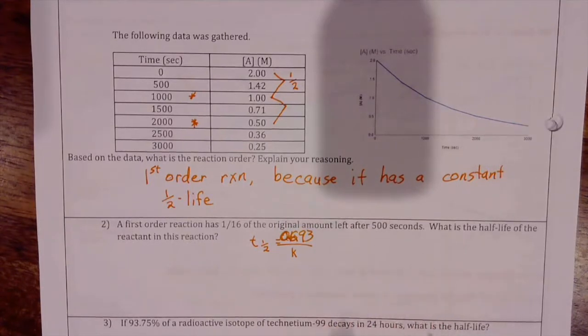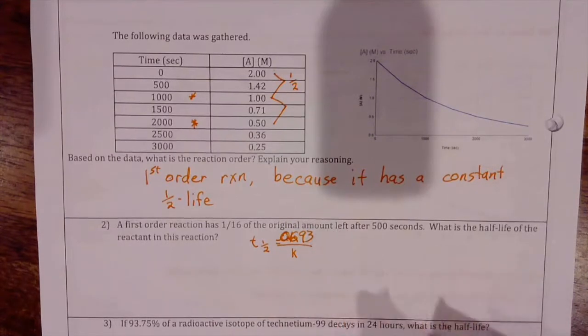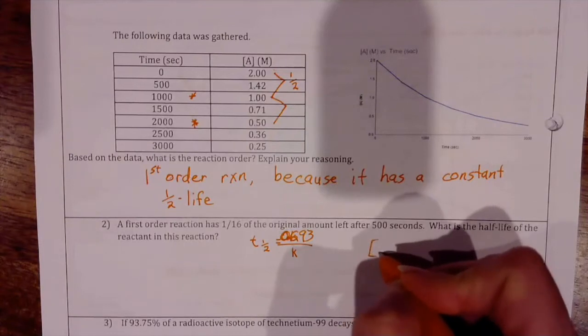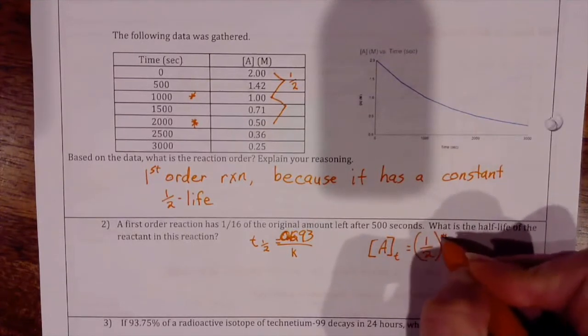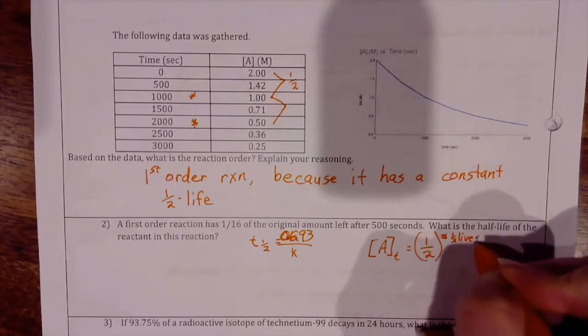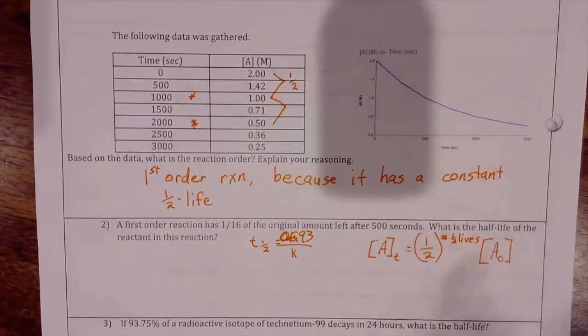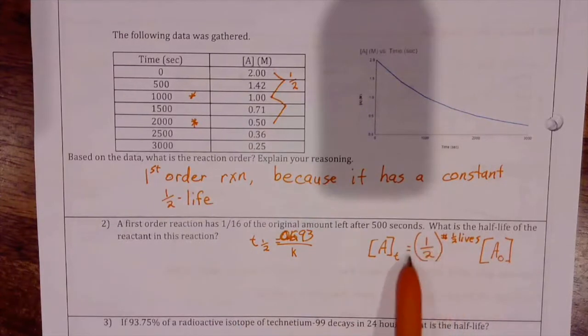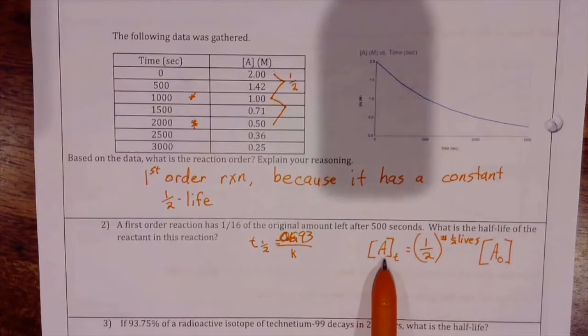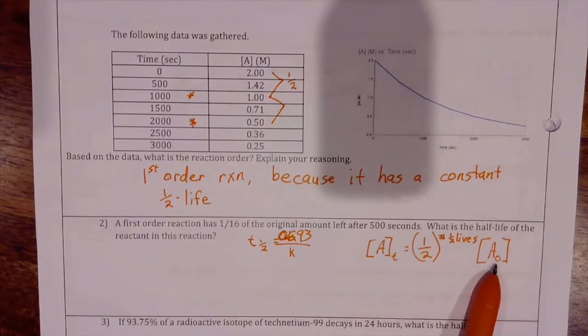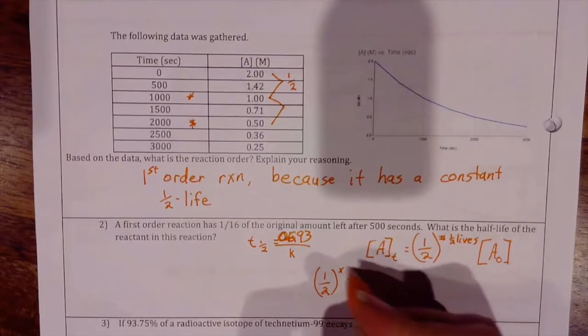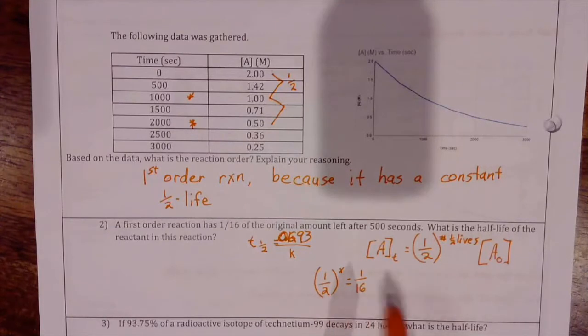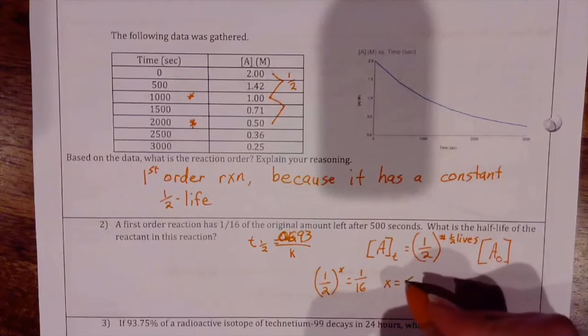What I do know is that I have 1/16th left after 500 seconds. So I know that after one half-life, I'm going to have half left. And after two half-lives, I'm going to have 1/2 times 1/2, or 1/4. The concentration at any time equals 1/2 raised to the number of half-lives times the original concentration. So 1/2 raised to the x is 1/16th. I would have to raise 1/2 to the fourth power to get 1/16, so that would be 4 half-lives.